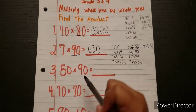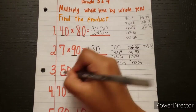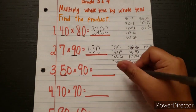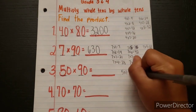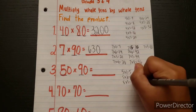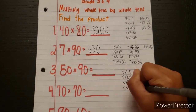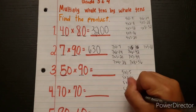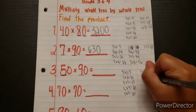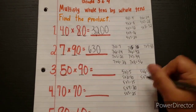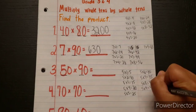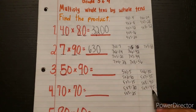We have 50 times 90. So we need to multiply 5 times 9. Let's go ahead and write the multiples of 5 right here. We have 5×1=5, 5×2=10, 5×3=15, 5×4=20, 5×5=25, 5×6=30, 5×7=35, 5×8=40, and 5×9=45. So we have 5 times 9 equals 45.